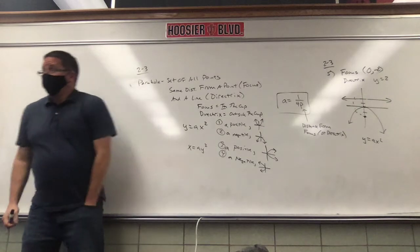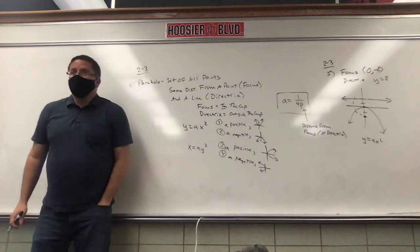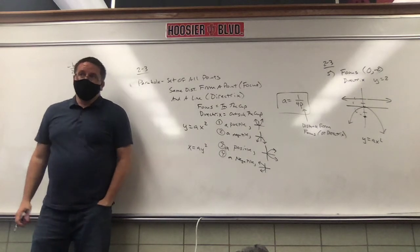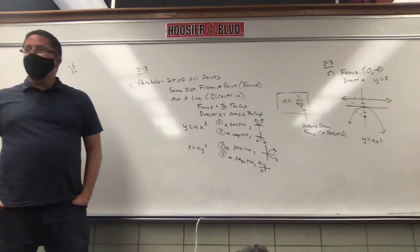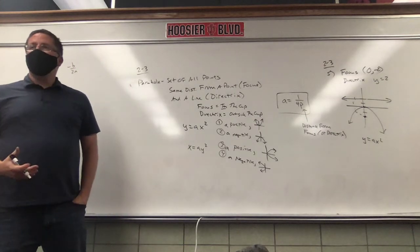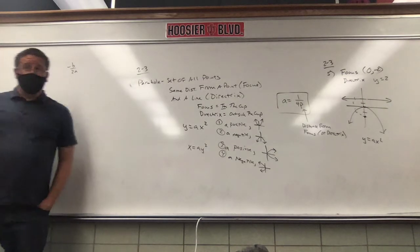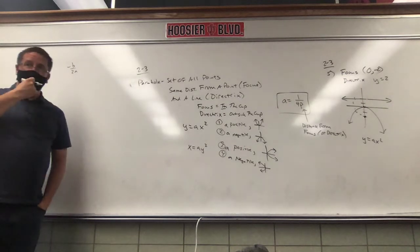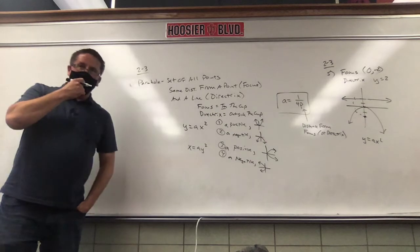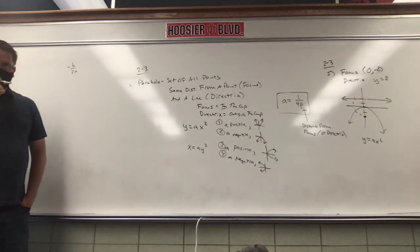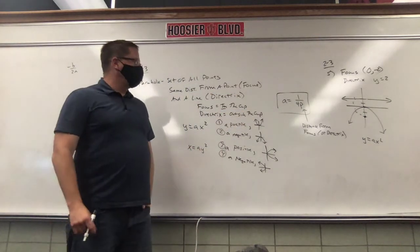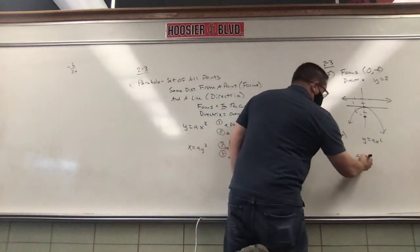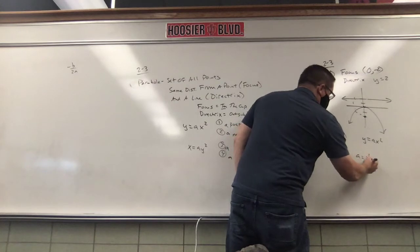We know something about A. A is negative. Negative what? We don't know — it's negative something. We've got to find out what A is. If only we had a formula that helped us find out what A is. A equals 1 over 4P.